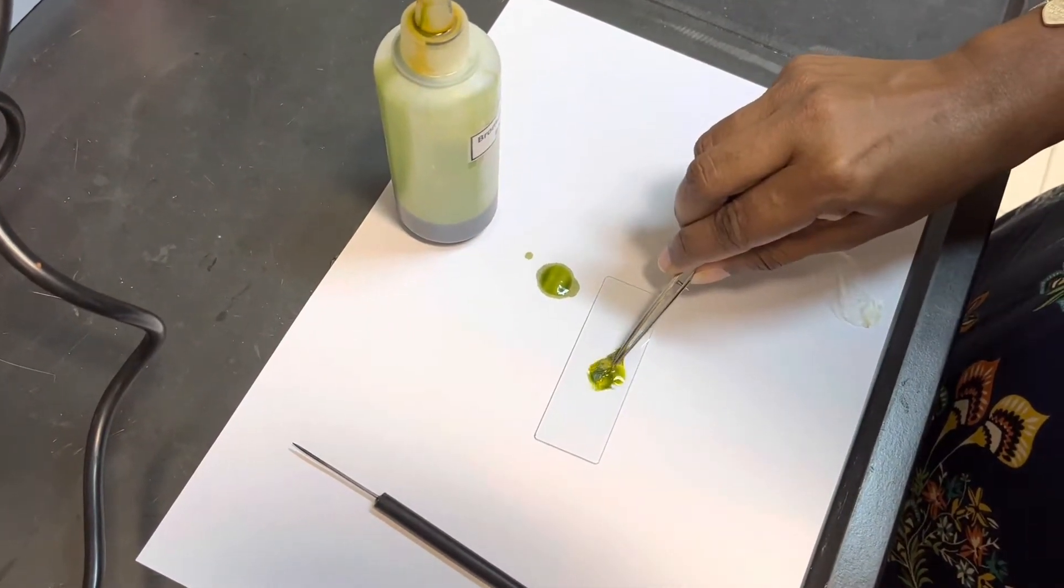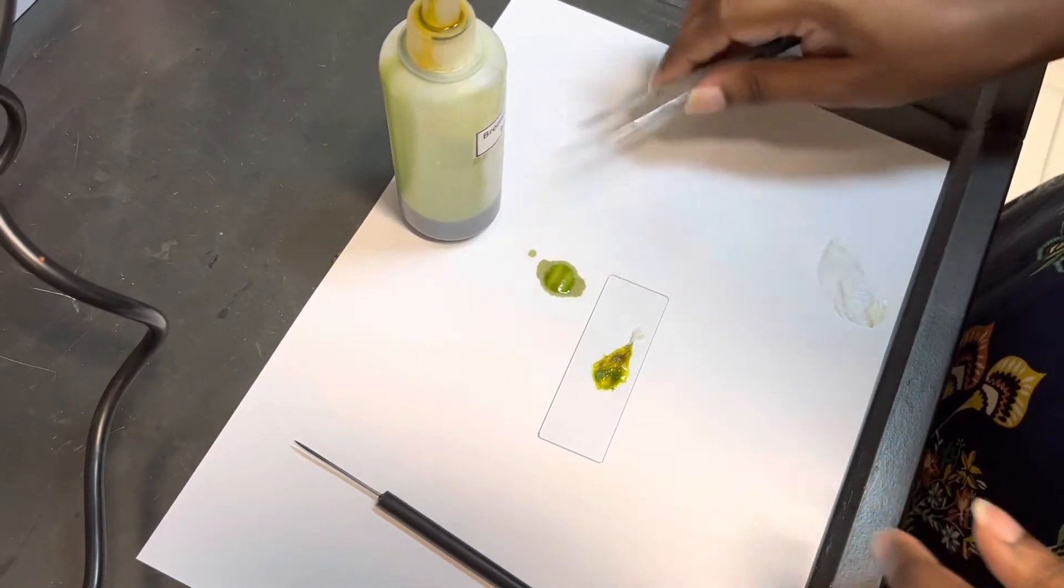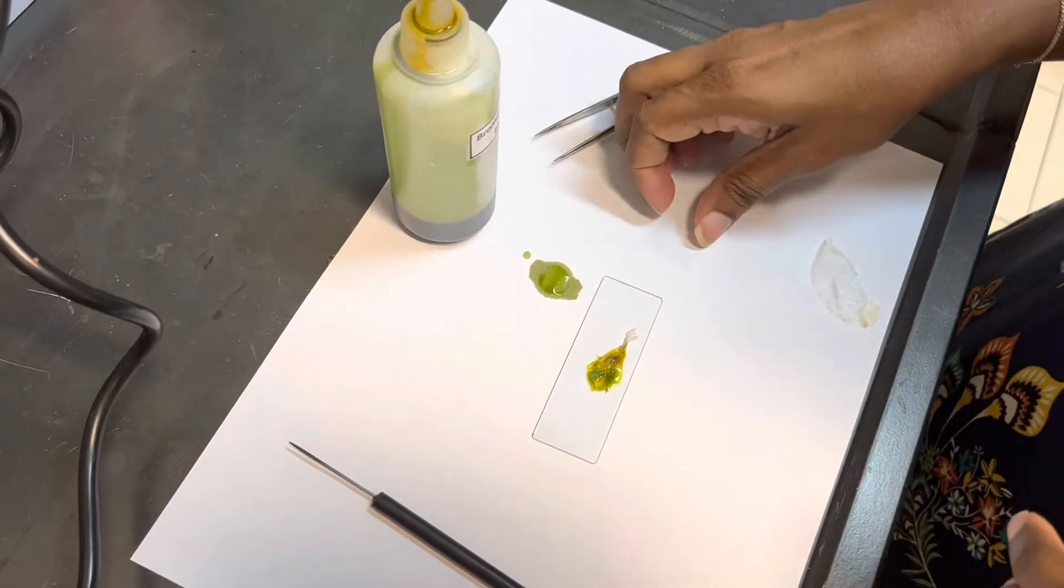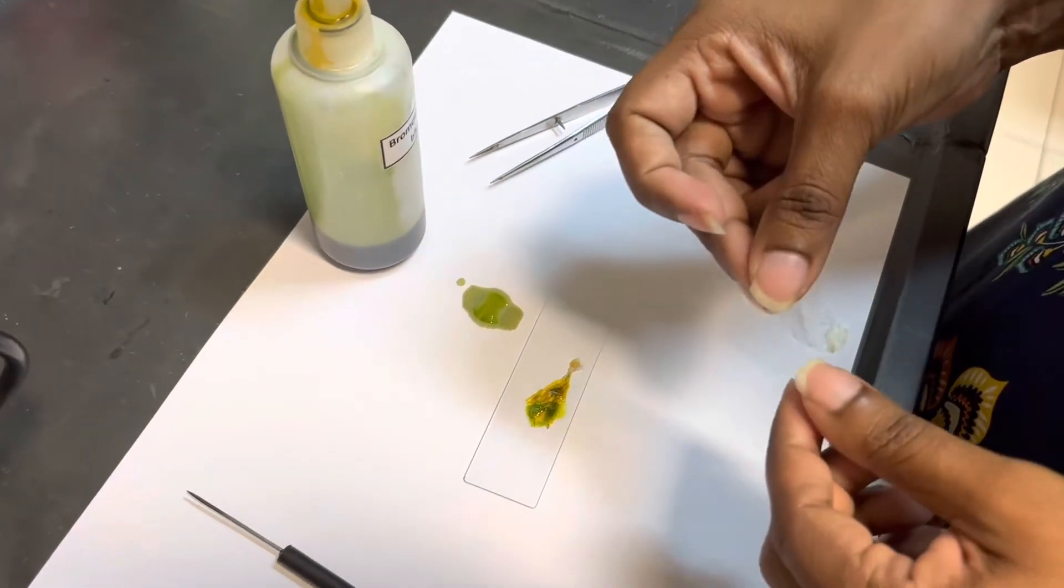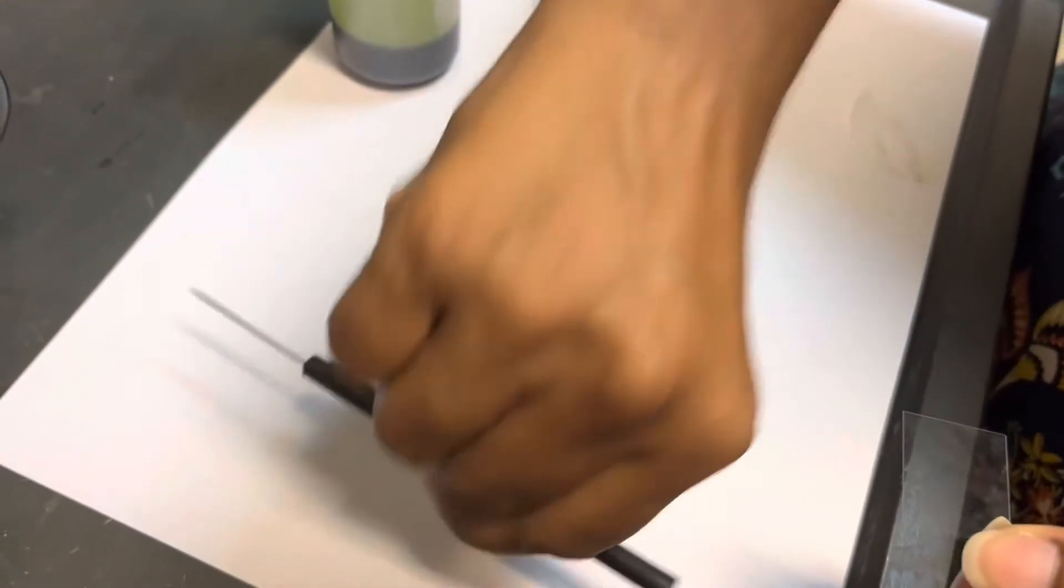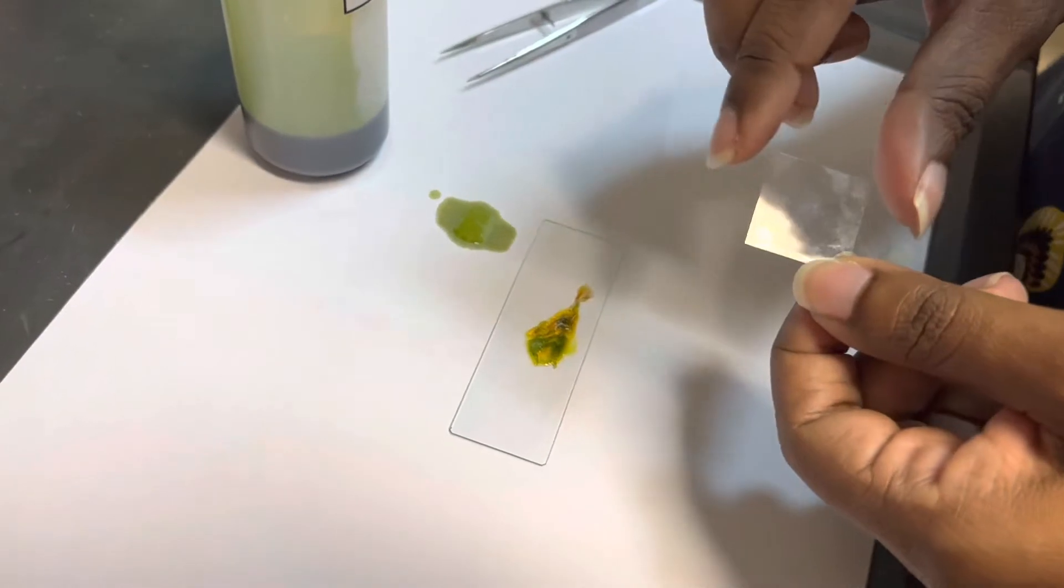So if this is the stain, we'll need to use this thing called a cover slip. This is to protect the specimen as well as the microscope lens.